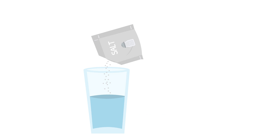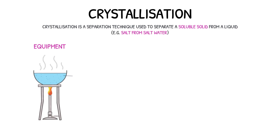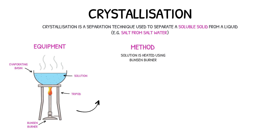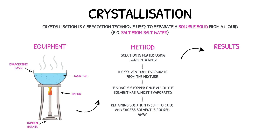If we wanted to obtain the salt from this salt water solution, we would use a separation technique called crystallization. Crystallization is used to separate a soluble solid from a liquid. The salt water solution is poured into an evaporating basin and placed onto a tripod. A heat source, such as a Bunsen burner, is then placed beneath. The salt water is heated, and as the water has a lower boiling point than the solute, it will begin to evaporate from the mixture first. The heating is stopped once all of the water has almost evaporated, and the solution is left to cool. At the end of the process, crystals of the salt are left behind in the evaporating basin.